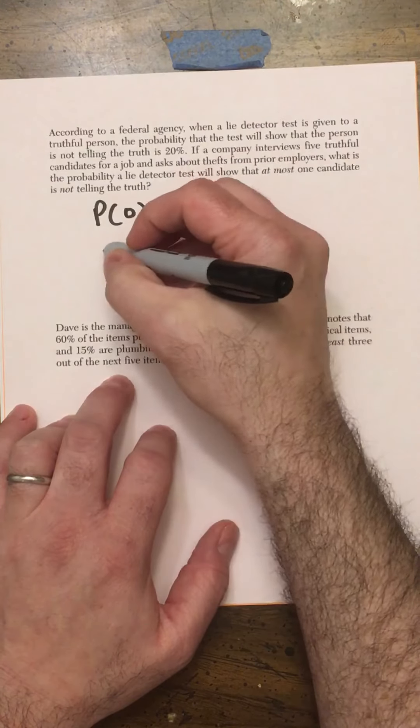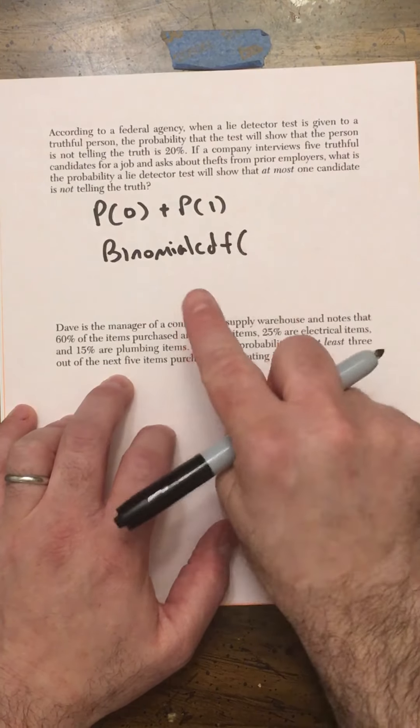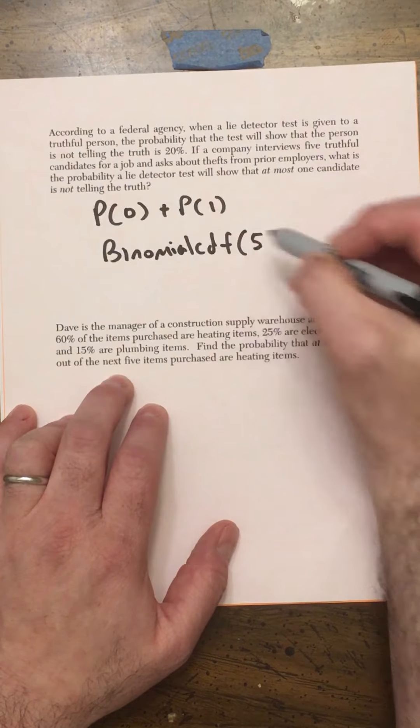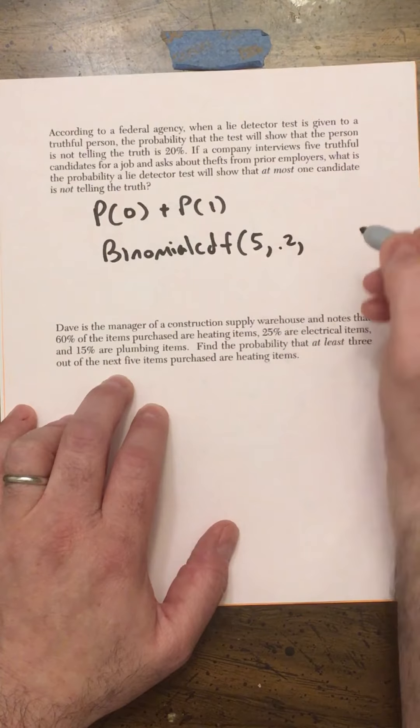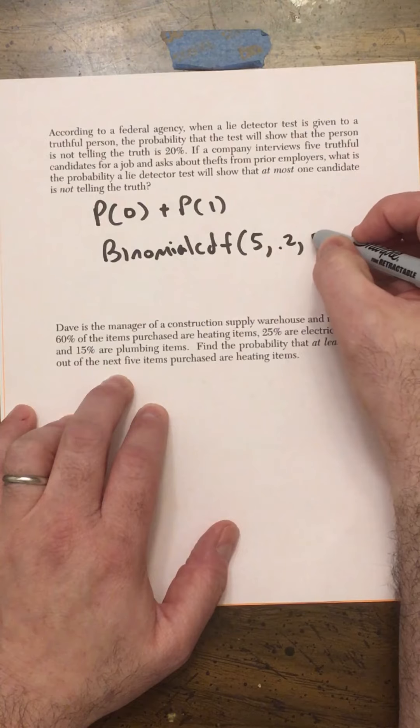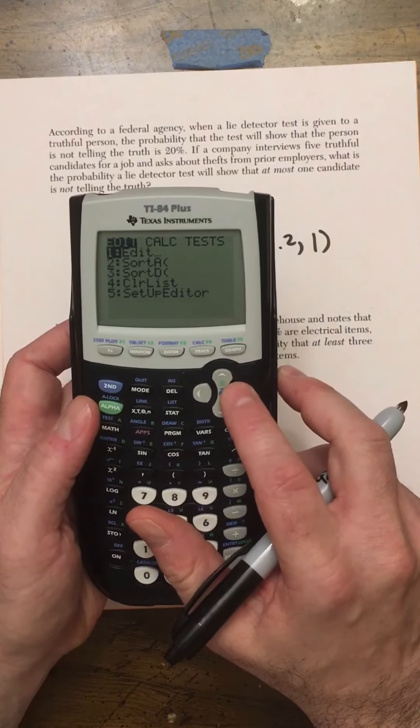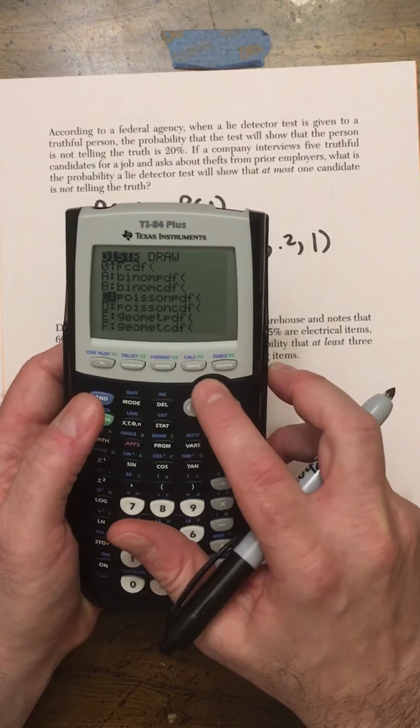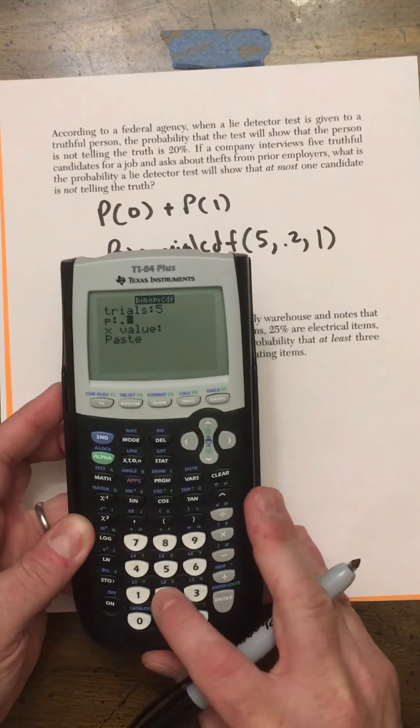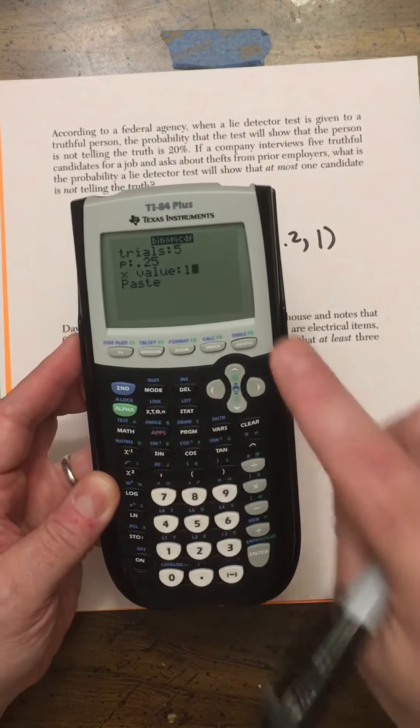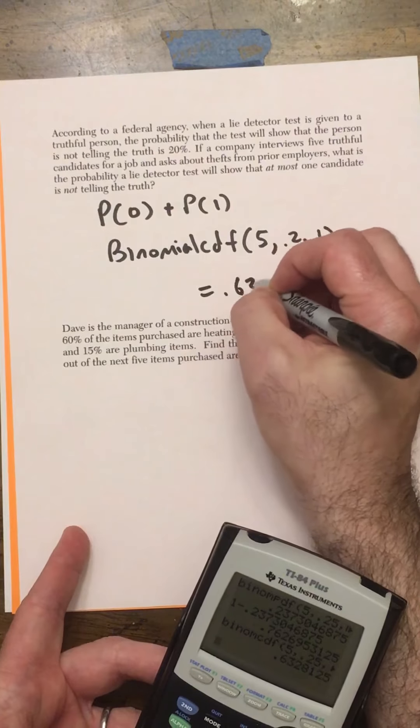Probability 0 plus the probability of 1, or we can do the binomial CDF where we count from 0 to 1. So we're doing a total of five people. That's a number of trials. Probability of finding somebody who's not telling the truth is 0.2. And now we want to pick one. This is going to count the zero and the one case. So we're going to go to second VARs distribution, we're going to go to the binomial CDF. We're going to put in five trials, P value of 0.25, and one. That will count from 0 to 1 because we're in the CDF mode. And that will give us 0.6328.